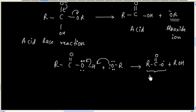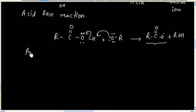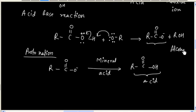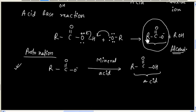If we add aqueous mineral acid, the carboxylate anion can be protonated. So we have the carboxylate anion, and if we add mineral acid it can be protonated, and finally we will have acid and alcohol. In this case we need acidification. If we do not do acidification, we will have the salt of the carboxylate anion. This is hydrolysis of ester in basic medium.